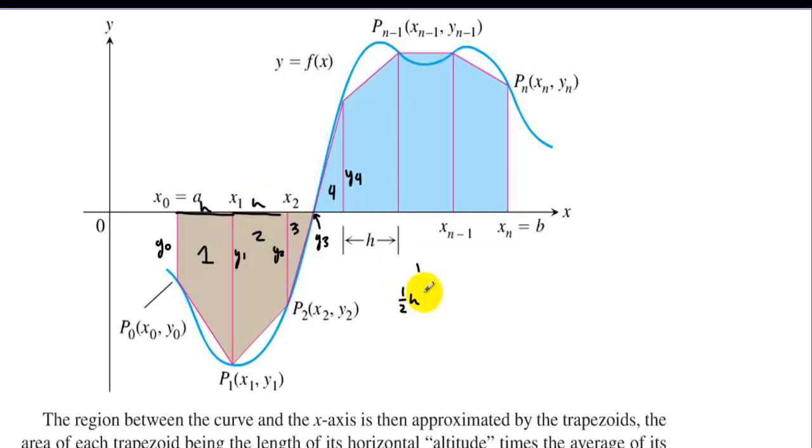So we have 1 half h times, and then we would have y sub 0 plus y sub 1. And then we'd have plus 1 half h times, then we would use y sub 1. In other words, base 1 plus base 2. That'd be y sub 1 plus y sub 2. Then we'd have 1 half h times y sub 2 plus y sub 3. And we'd keep going on in that fashion.